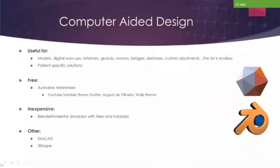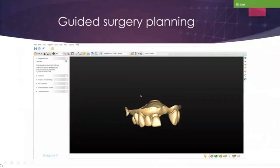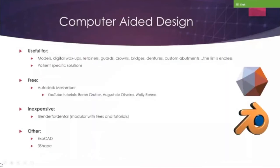Computer-aided design. I'll be quite quick with this. Autodesk Meshmixer is the best free CAD design software — I use that regularly. There are other software available but they're quite expensive in terms of outlay. I'd suggest that if people want to get into it, you just download the Meshmixer software and use the YouTube tutorials, which are quite self-explanatory, to start making basic models, wax-ups, et cetera.